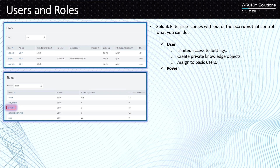The next higher level role is what you call the power role. With the power role, you still have limited access to settings and won't be able to see all those menu items, but the good thing is that you can create and publish or share knowledge objects. So if you created a dashboard, it's possible to share that dashboard so that other people can see it — which you cannot do with the user role.